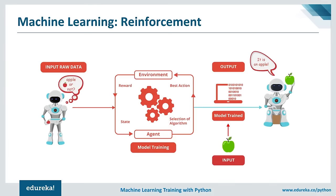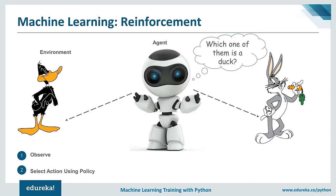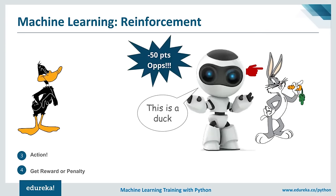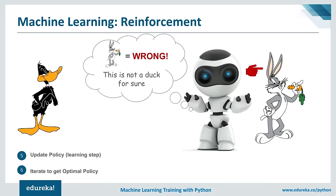For example, a machine is confused whether something is an apple. It's trained using reinforcement learning — correct decisions earn reward points, wrong decisions earn penalties. Once trained, the machine easily identifies which is an apple. In another example, an agent must identify which of two animals is a duck. It observes the environment, selects an action using a policy, makes a wrong decision by choosing a bunny as a duck, receives a penalty of minus 50 points, updates its policy, and continues until it achieves an optimal policy.